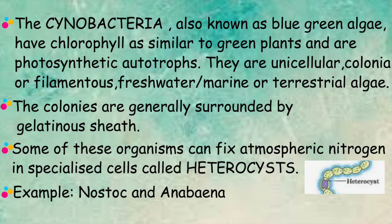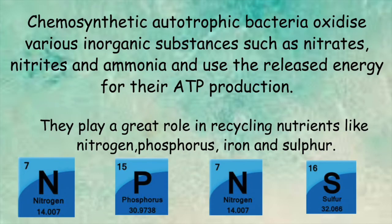The colonies are generally surrounded by a gelatinous sheath. Some of these organisms can fix atmospheric nitrogen in specialized cells called heterocysts. Examples are Nostoc and Anabaena. Chemosynthetic autotrophic bacteria oxidize various inorganic substances such as nitrates, nitrites, and ammonia, and use the released energy for their ATP production. They play a great role in recycling nutrients like nitrogen, phosphorus, iron and sulfur.